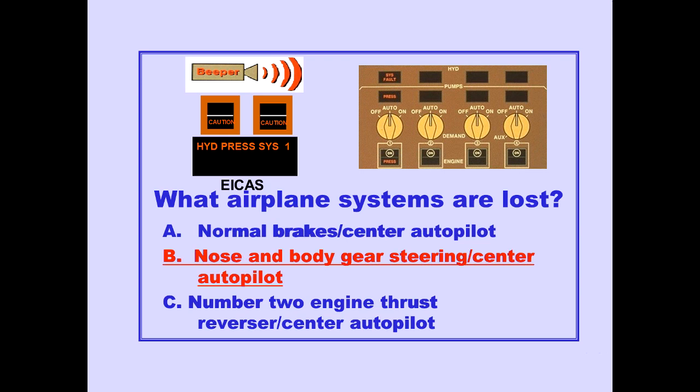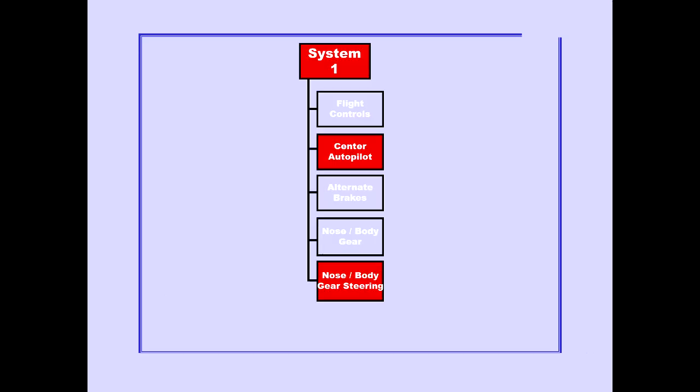Answer B is correct. Hydraulic System 1 powers the center autopilot and nose and body gear steering. Hydraulic System 1 also powers flight controls, alternate brakes, and nose and body gear actuation.